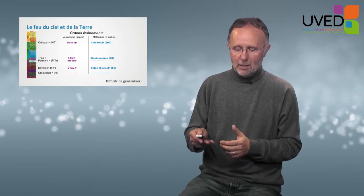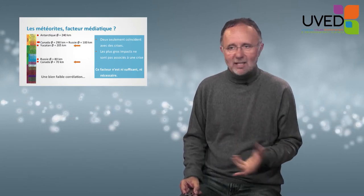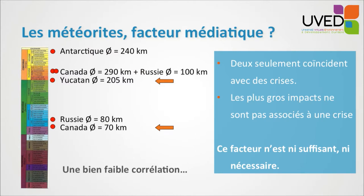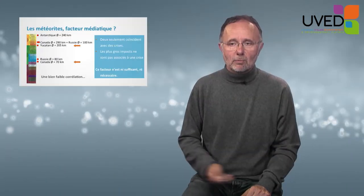So it's very difficult to generalize the theory. If we focus on meteorites — something the media love — there is very weak correlation. Only two crises have a matching meteorite: between Triassic and Jurassic, and the Cretaceous crisis hitting the Earth in Yucatan, Mexico, with a huge crater of approximately 200 kilometers in diameter. We also have other large meteorite impacts recorded in the fossil registry for which there is no matching crisis. So a meteorite is neither a sufficient nor a necessary factor for a crisis to take place.